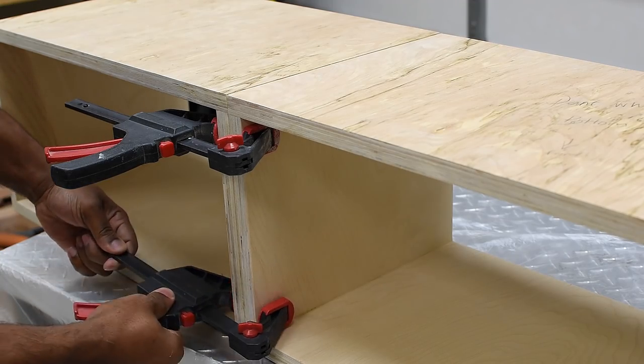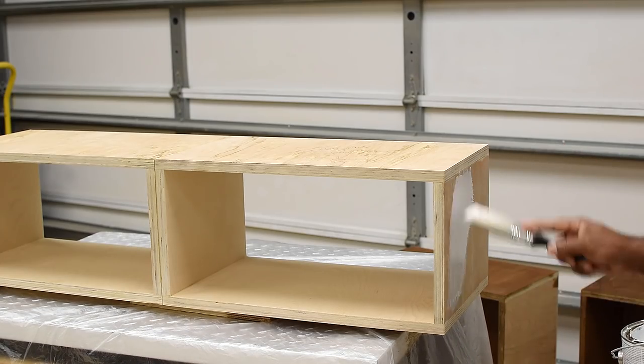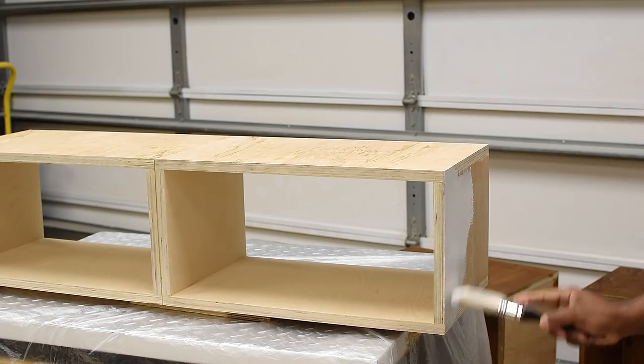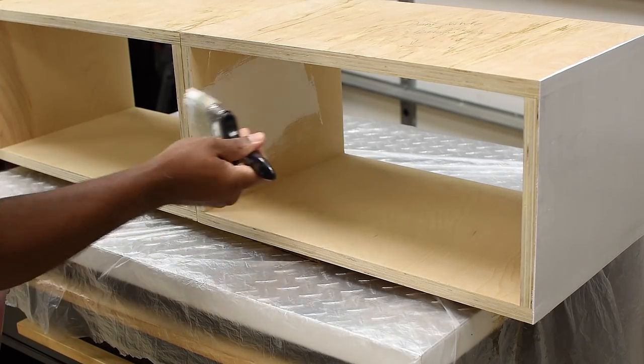While all the other pieces are finished with Danish oil, this is going to be the only piece that gets painted. I apply one coat of primer and then two coats of white paint.